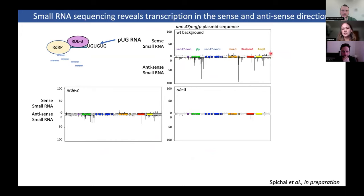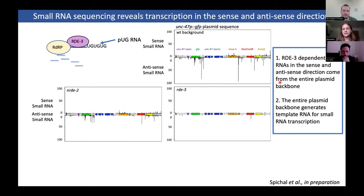We could also see sense small RNAs that covered the entire plasmid backbone, which was an unexpected and surprising finding. This was also the case in the NERD2 mutant, where we did not see any small RNAs covering the plasmid backbone, indicating that these sense and antisense small RNAs were RDS3-dependent and were generated from templates transcribed from the entire plasmid backbone.